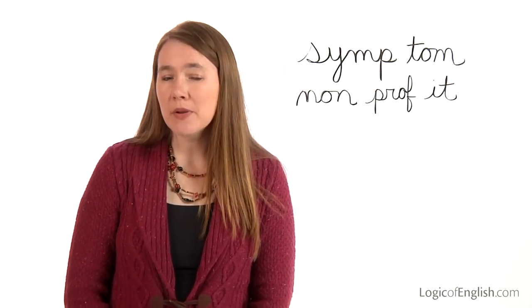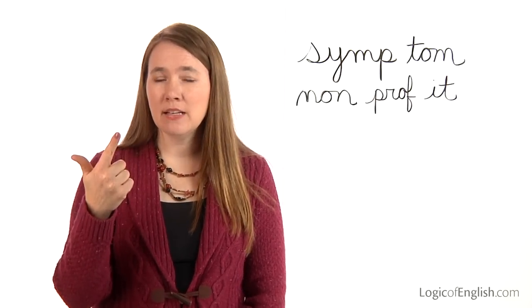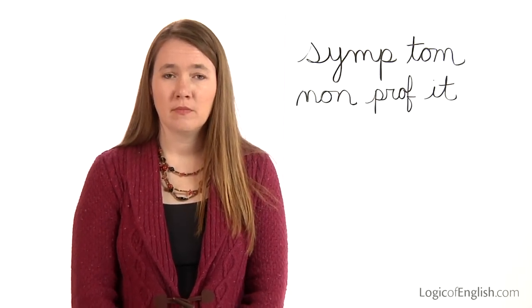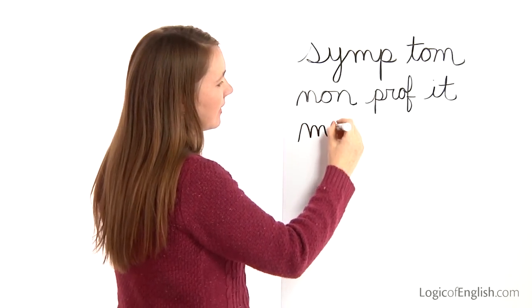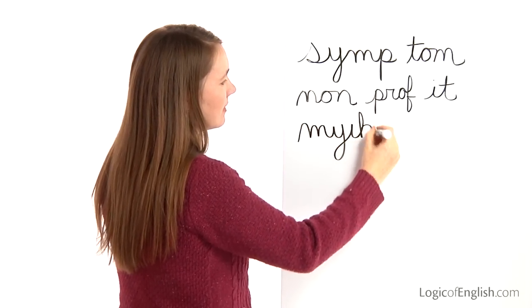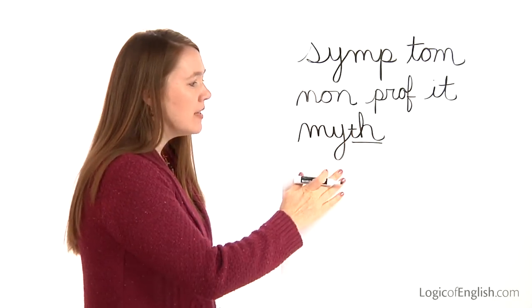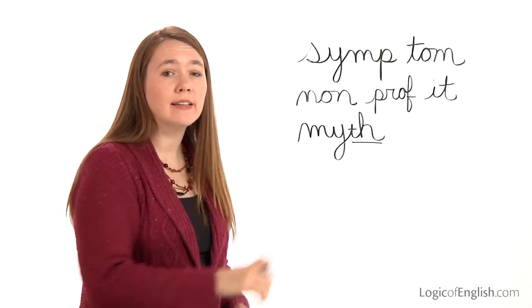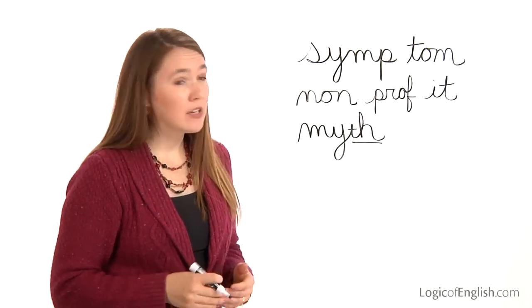The next word is myth. Today we will read a Greek myth. Let's sound out myth together: M, i — this is a y saying i, i, e — th. Go ahead and write myth. M, y, th. And how will we mark it? Underline the th. Notice the y is saying the i sound in the word myth — it is saying the vowel sound i. The sounds of y are y, i, i, e. And so here it's saying the i sound.